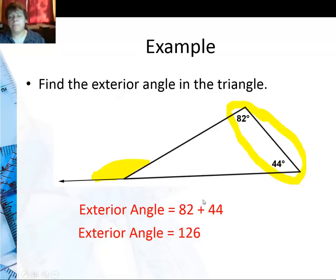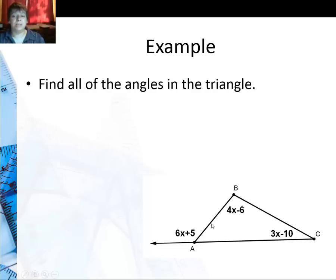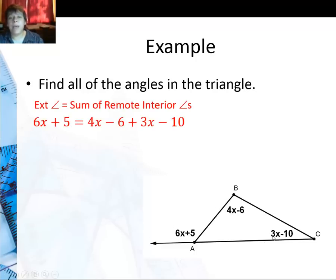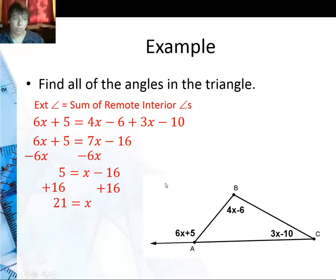Now you might see a simple problem like this but odds are you're actually going to see something more like this with a little more algebra in it. So we're going to do the same thing. The exterior angle is the sum of the two remote interior angles. So I'm going to say 6x plus 5 equals those two added together. 6x plus 5 is 4x minus 6 plus 3x minus 10. Combine my like terms, subtract 6x from both sides and then add 16 to both sides and I get x is 21.